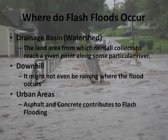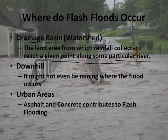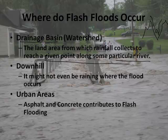Where do flash floods occur? They occur in the drainage basin. Just to recall: a drainage basin is the land area from which rainfall collects to reach a given point along a particular river. So if you've got a peak of a mountain, all the water that falls on this side is going to flow downhill. From a mountain range over here too, you have a canyon, and that can create lots of water flowing — it kind of funnels and channels the water.